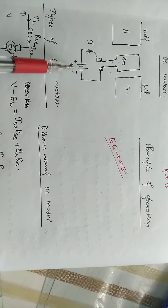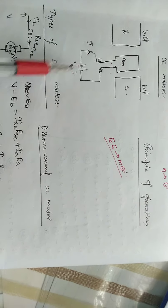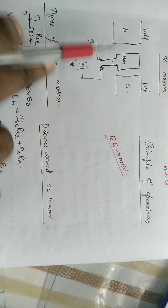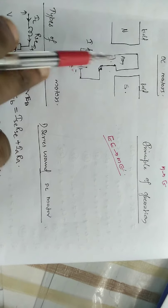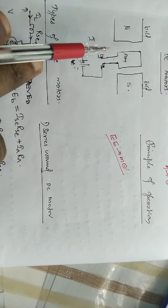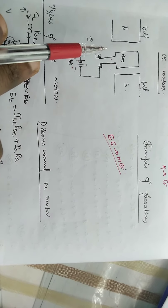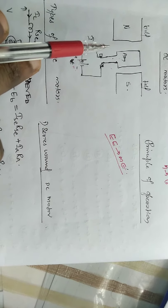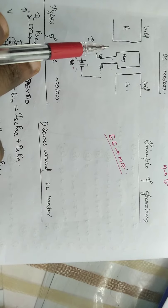We are providing electrical energy and it will rotate, so we get mechanical energy. We will now look at the working principle of the DC motor. The DC motor works on Faraday's law of electromagnetic induction.